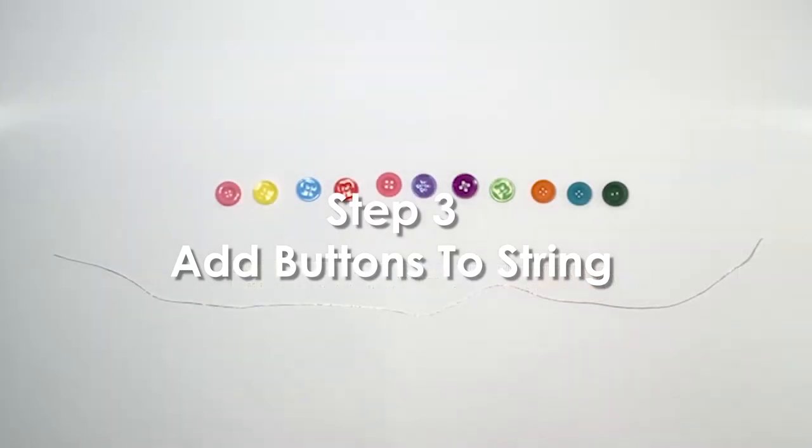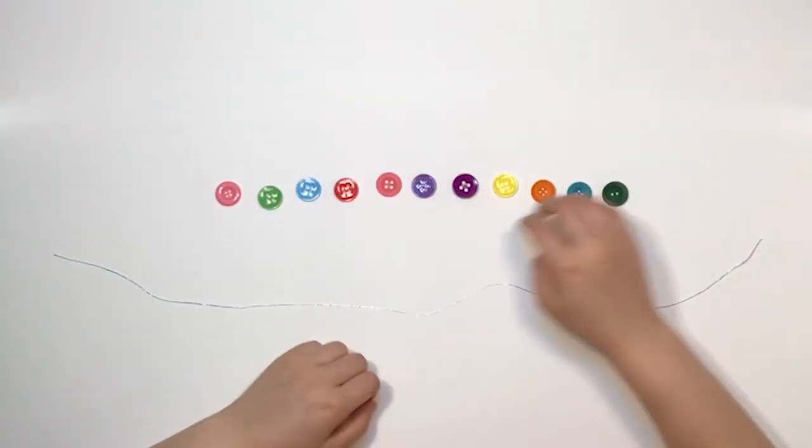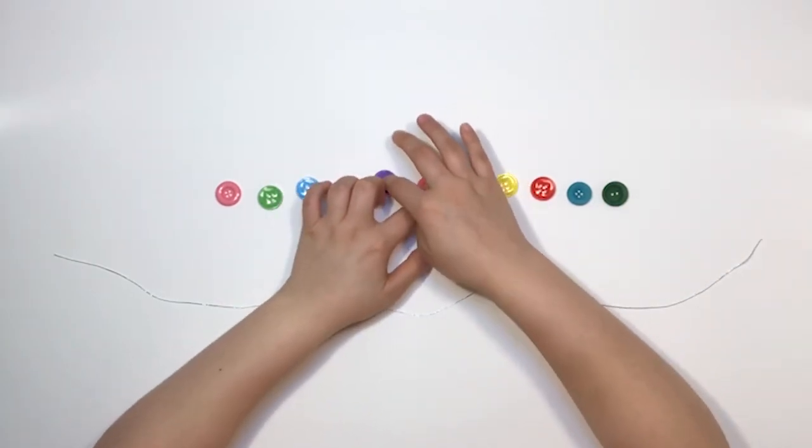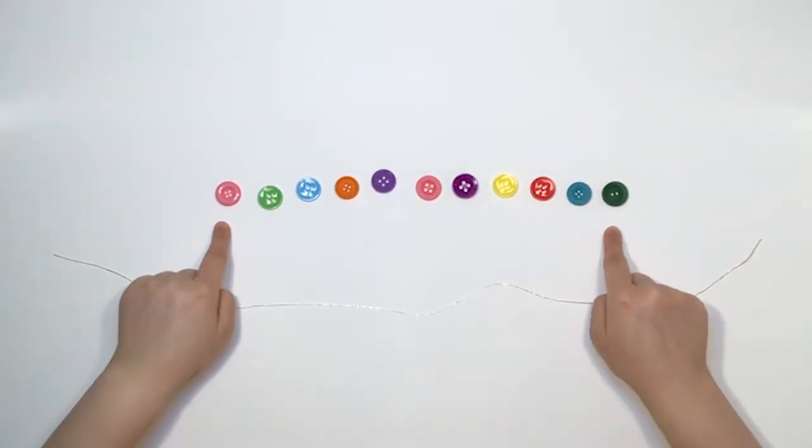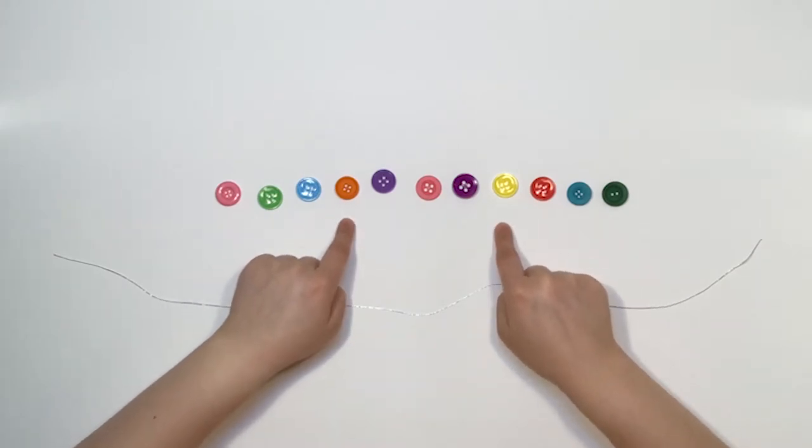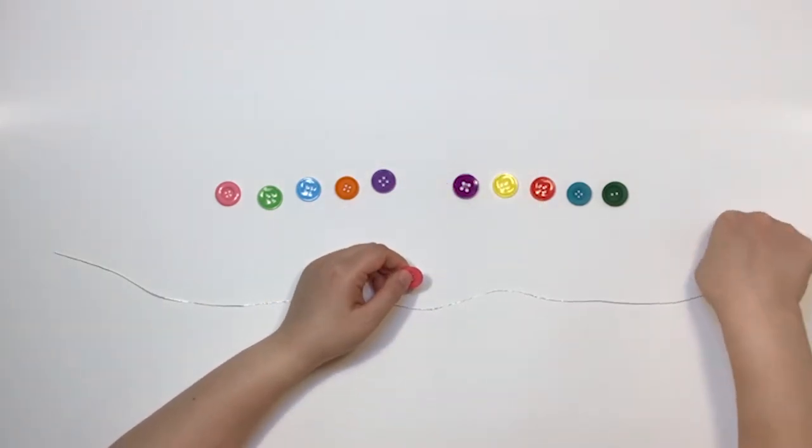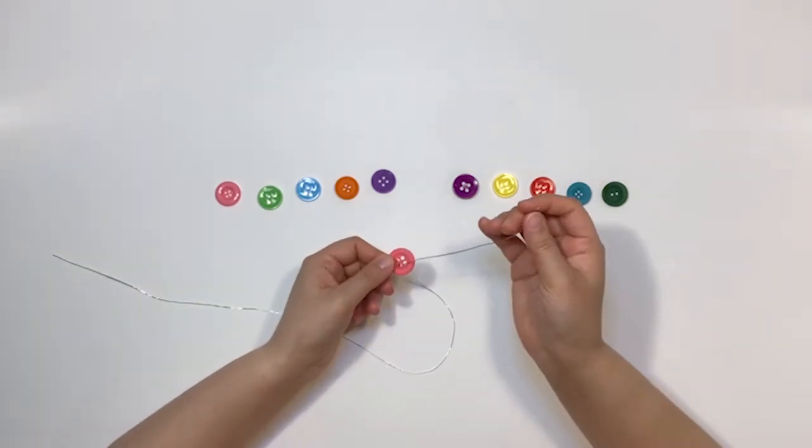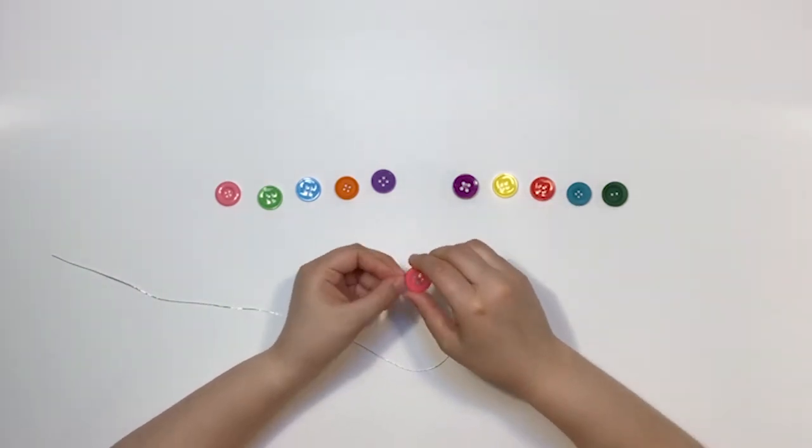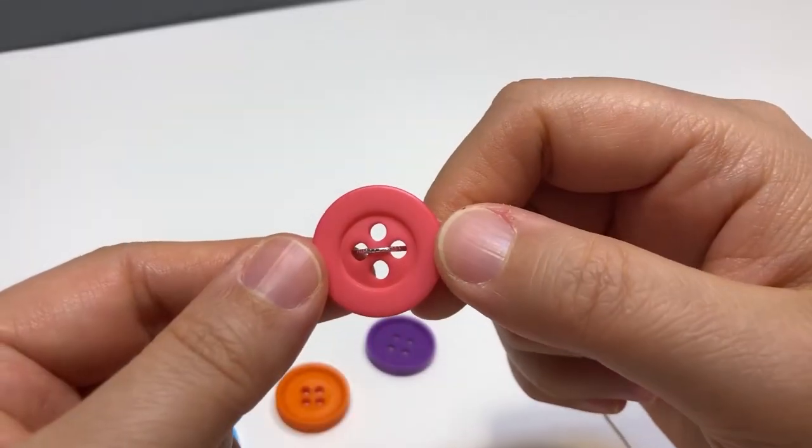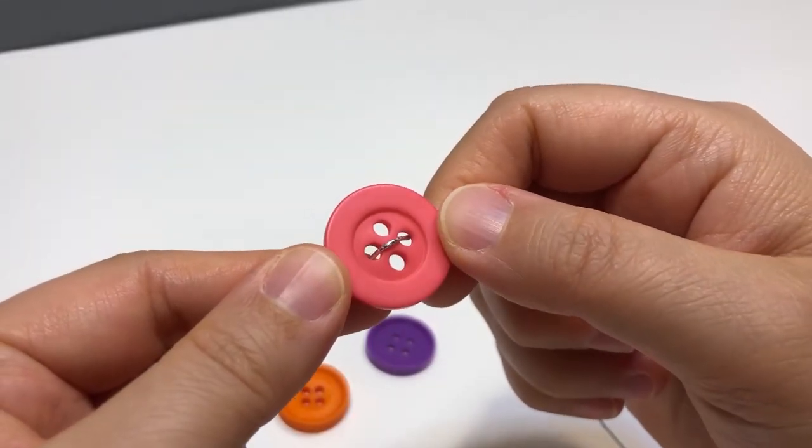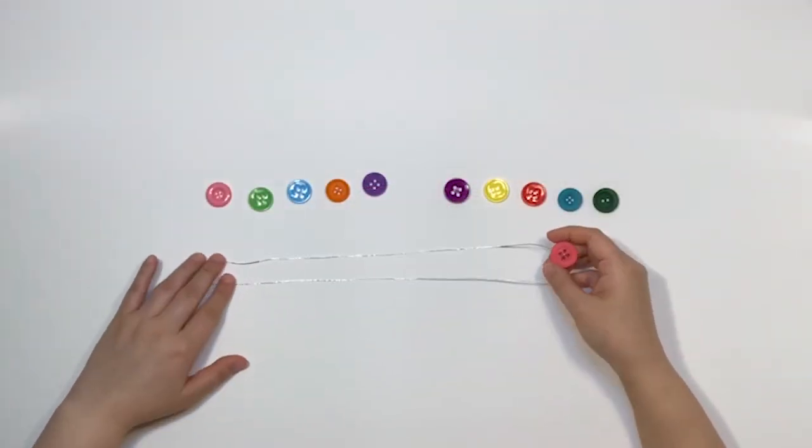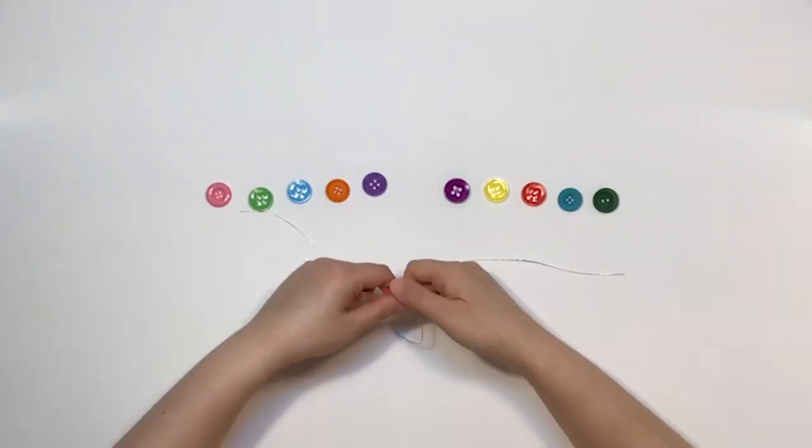Step 3: Add buttons to string. Line your buttons up in the order that you want them to appear on the necklace. Then find your middle button by counting from the outside in. Take one end of the cord and put it in one of the button's holes from underneath. Then thread it back through the hole opposite of the first hole. If your button has four holes it should look like this. Then adjust your button so that it is centered on the cord with the two ends at the same length.